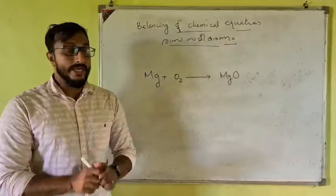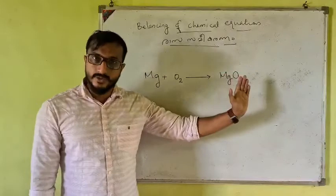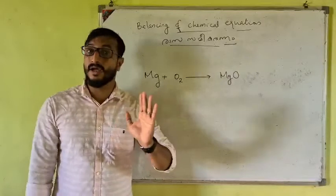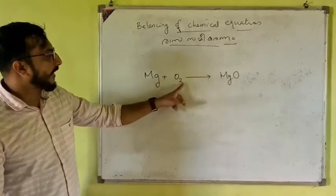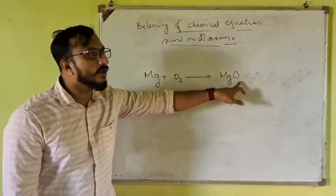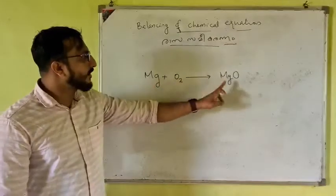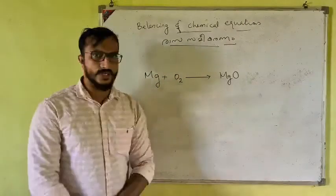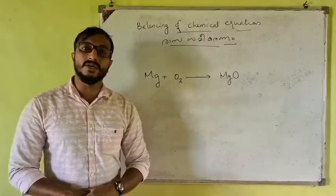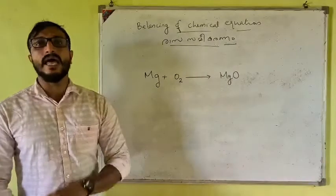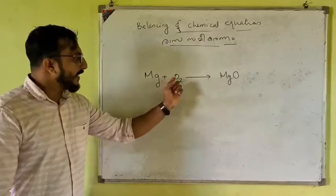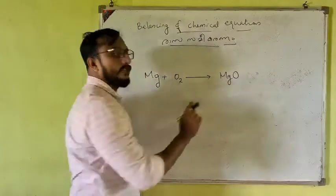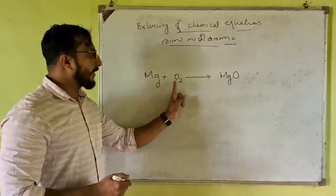Is this equation a balanced equation? No. Why? Here on the reactant side there are two oxygen atoms in O2, but on the product side there is only one oxygen in MgO.